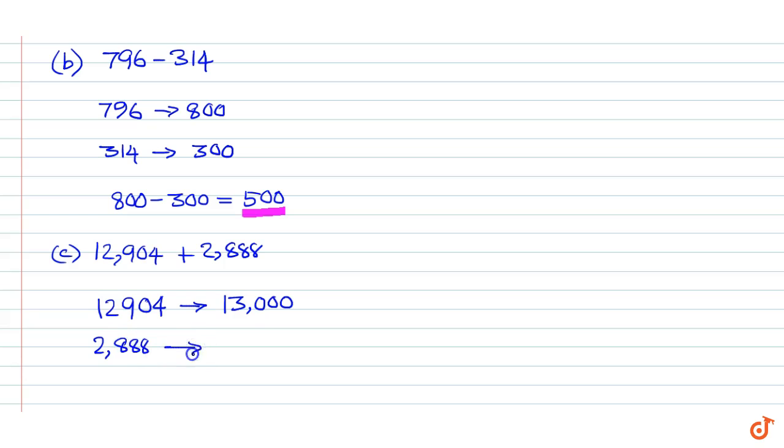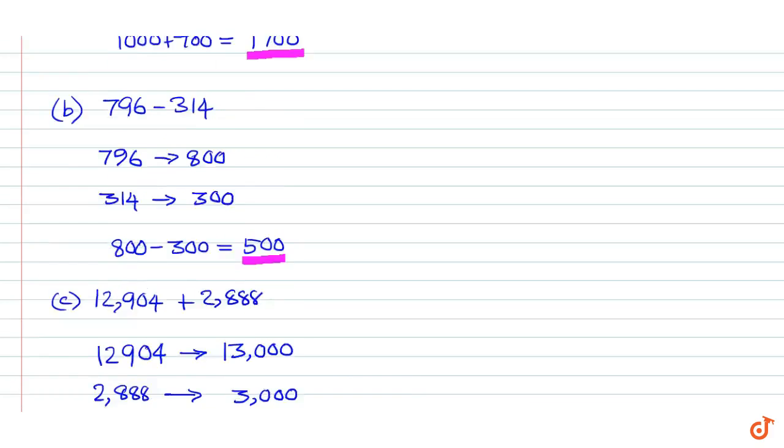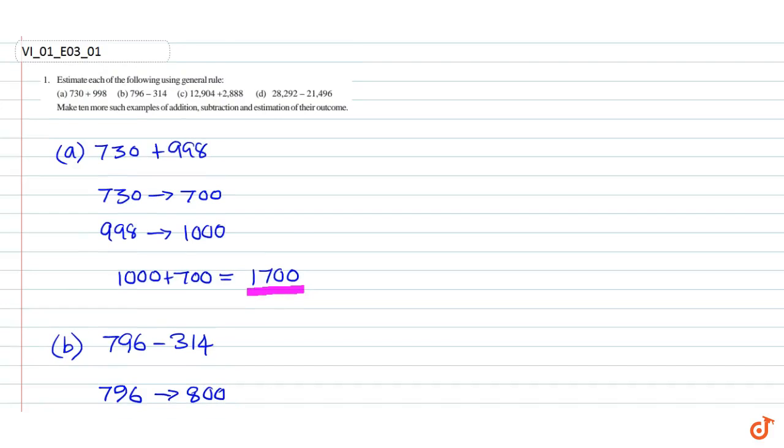2888 rounds off to nearest 1000, that is 3000. Therefore 13000 plus 3000 is equal to 16000. This is our answer to part c, part d.